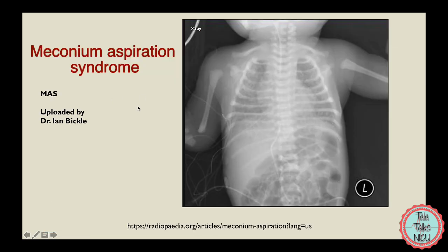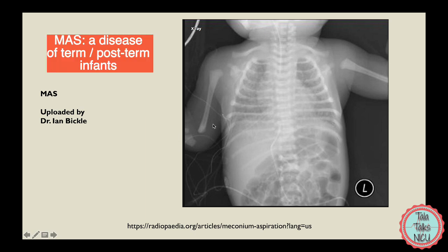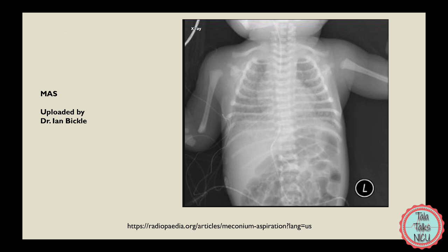Now let's move on to meconium aspiration syndrome, or MAS. MAS is mostly a disease of term or post-term babies — it happens when babies get stressed in utero, lack oxygen, and as a result pass meconium in utero. If they're even more stressed they'll gasp and inhale this meconium. Meconium is a horrible sticky substance that can have a lot of bad effects on the lungs, and because of its various effects there are lots of different types of x-ray changes.